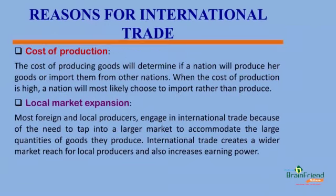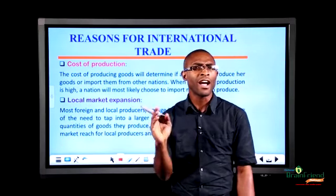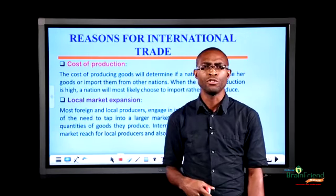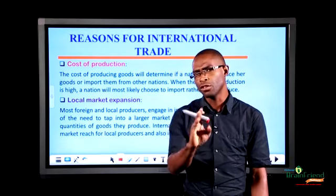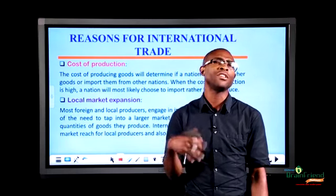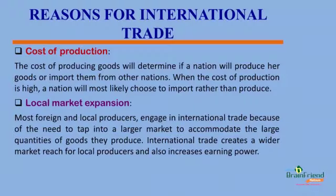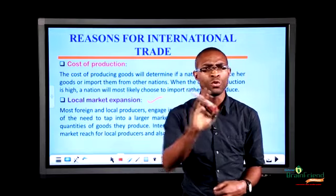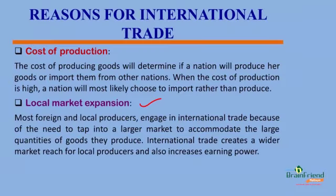We have cost of production as another reason for international trade. When the cost of producing goods and services is expensive, nations naturally desire to import these goods rather than produce them because it saves cost. So cost, based on production, determines if a nation will go into international trade or not. We also have local market expansion — producers who have the ability to produce numerous amounts of goods desire to expand their local market by shipping excess goods to other nations who need them.